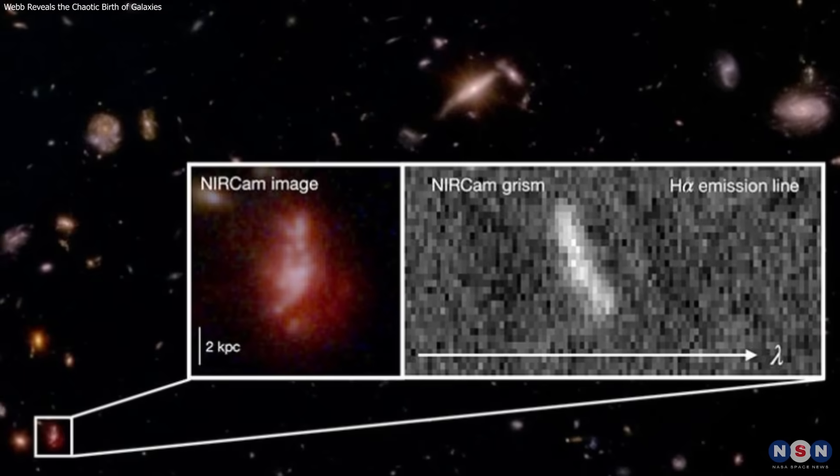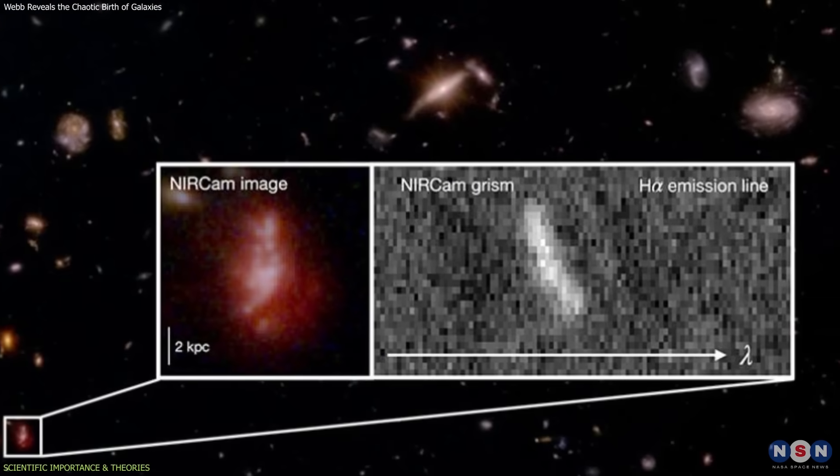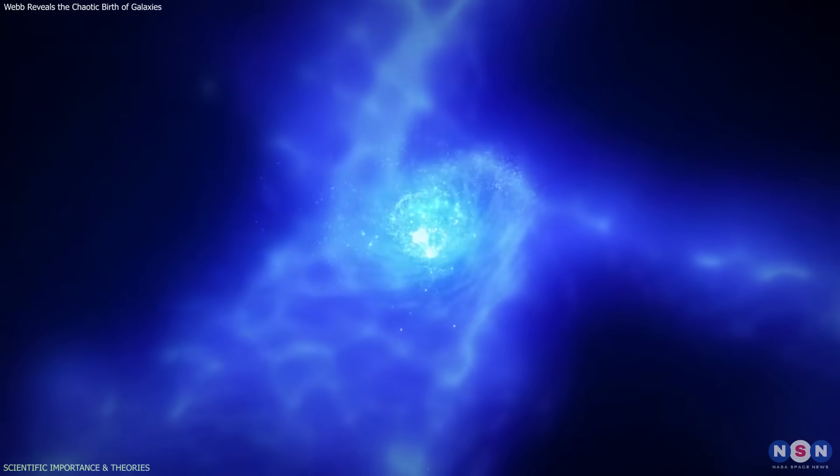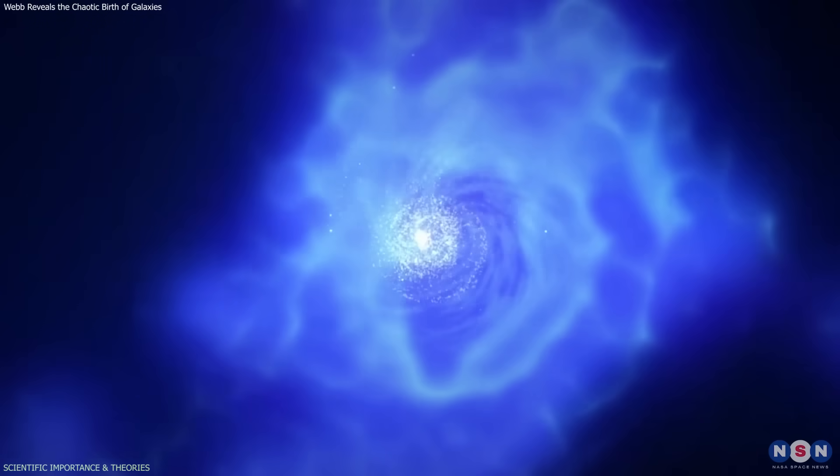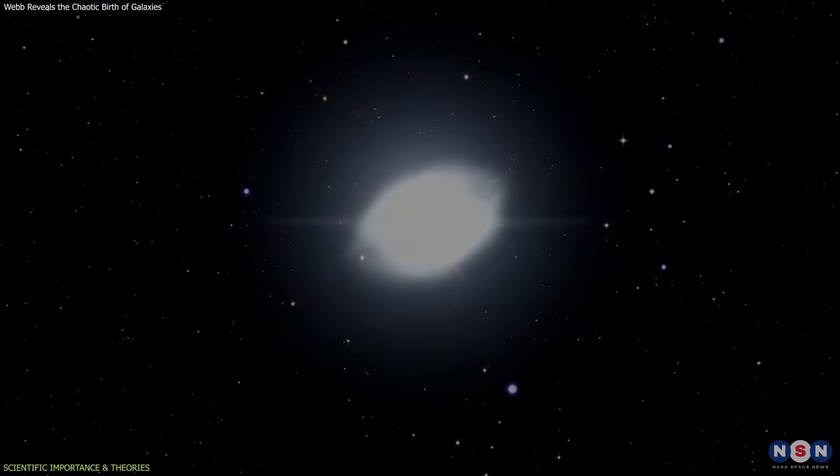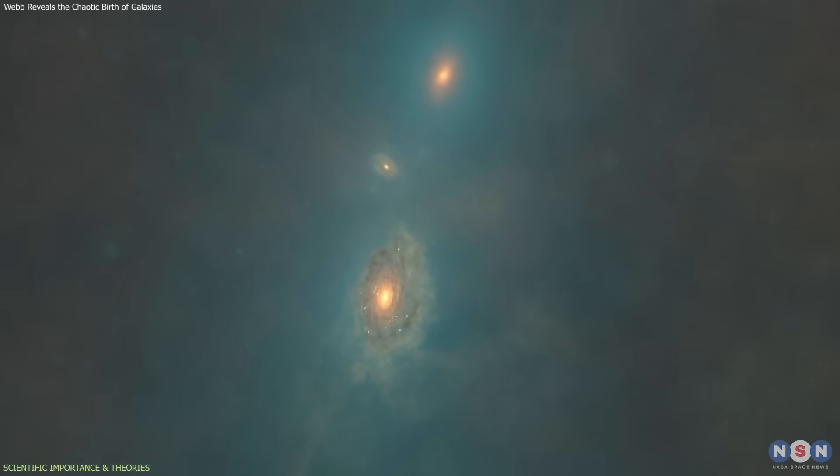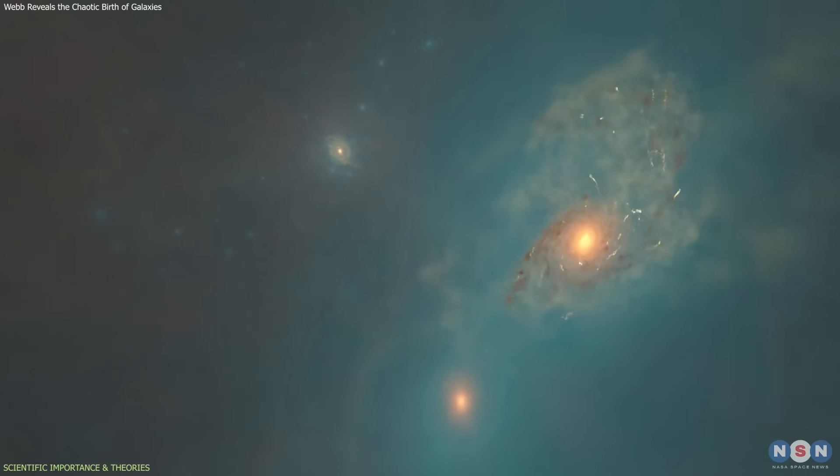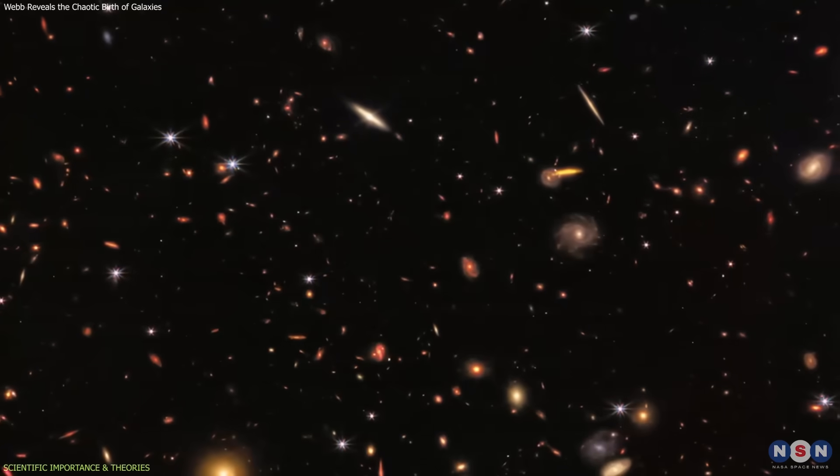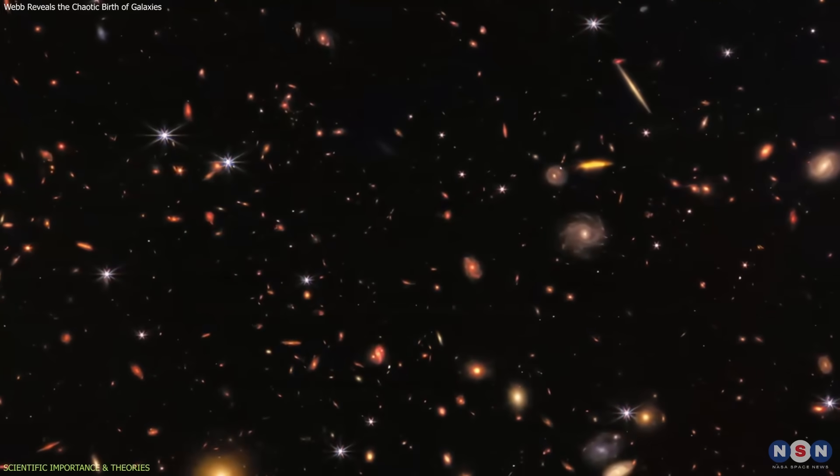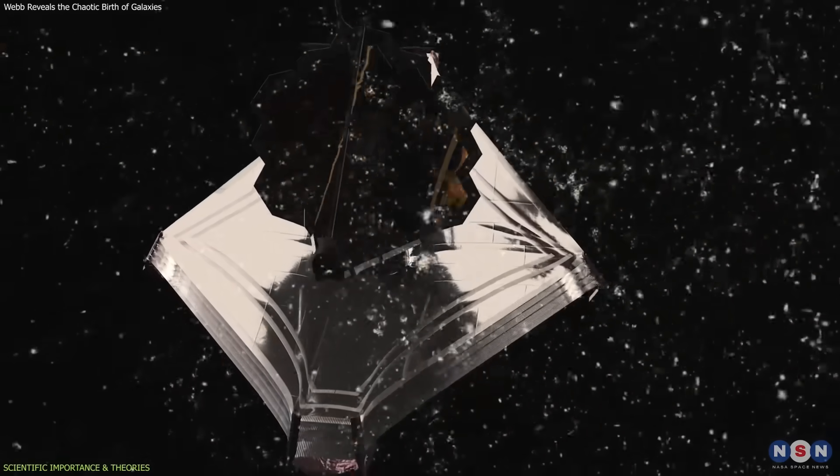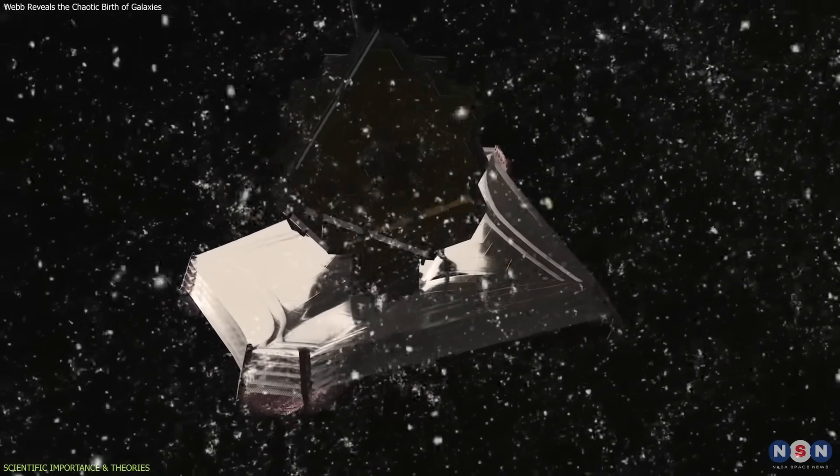Why is this important? Because it provides the strongest evidence yet that galaxy formation in the early universe was a messy, drawn-out process, not an immediate leap into structure. For decades, theoretical models predicted that early galaxies should be unstable, full of gas, and prone to turbulence. Observational evidence, however, was too sparse to confirm it at scale. JWST has now filled that gap.